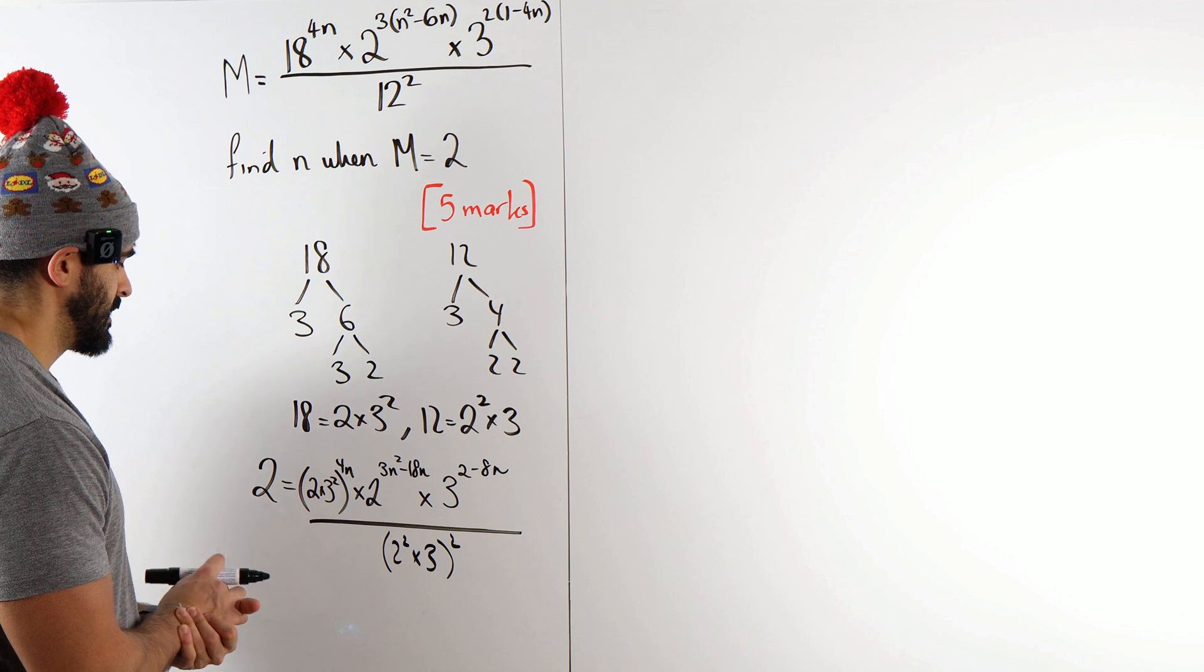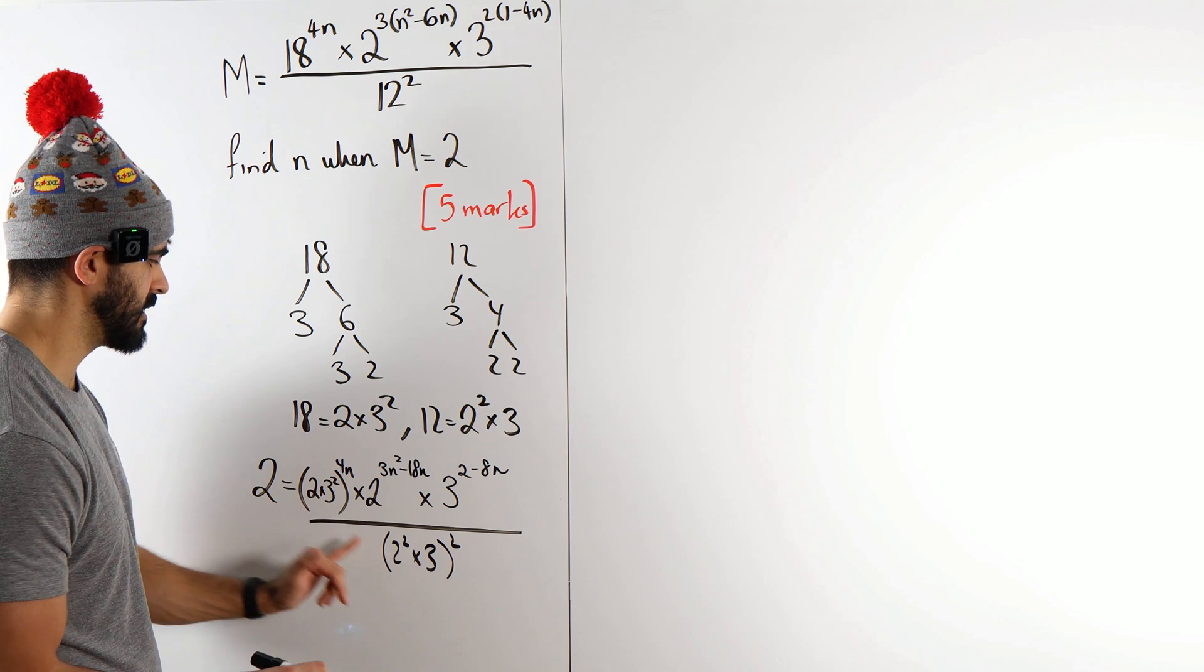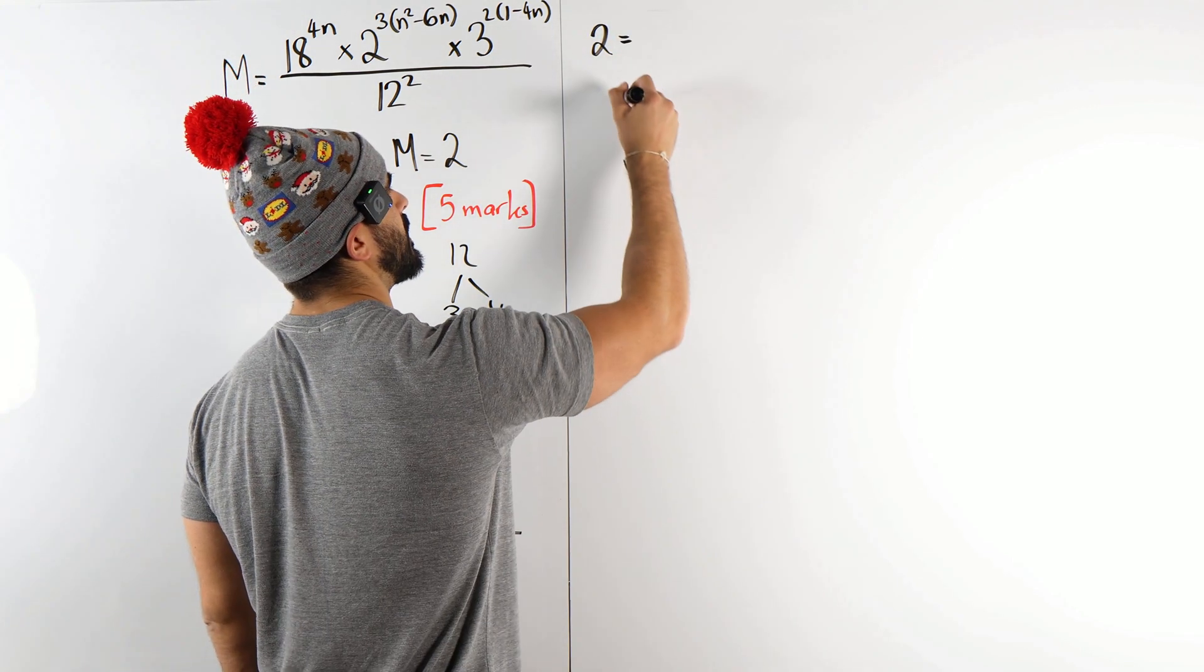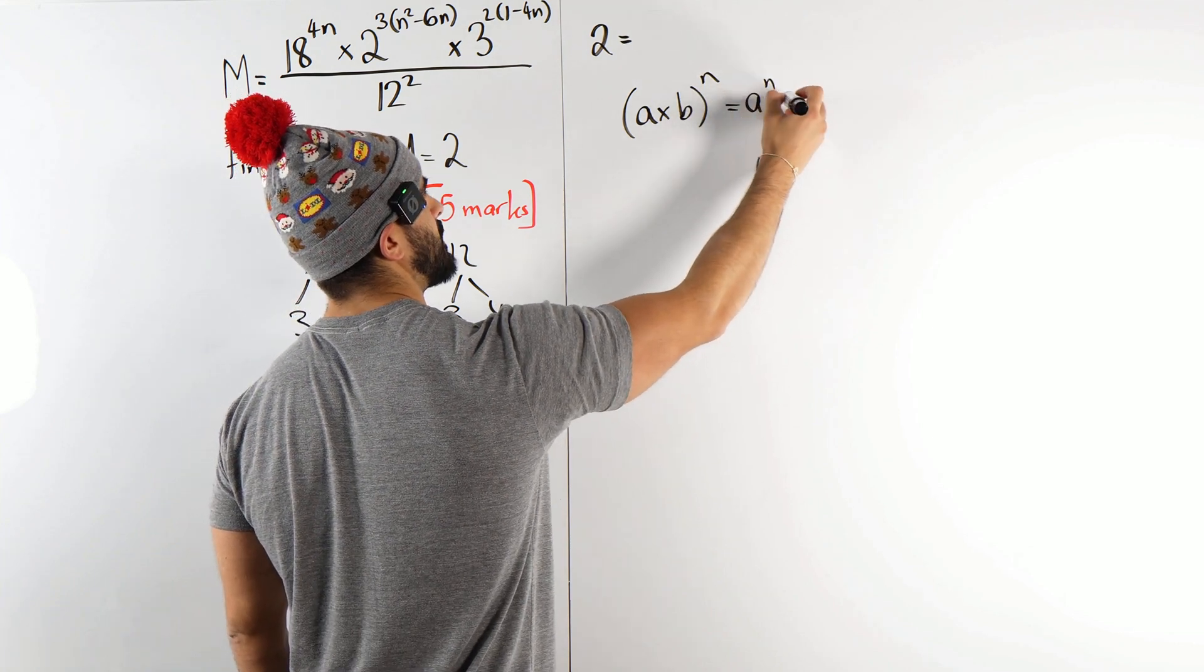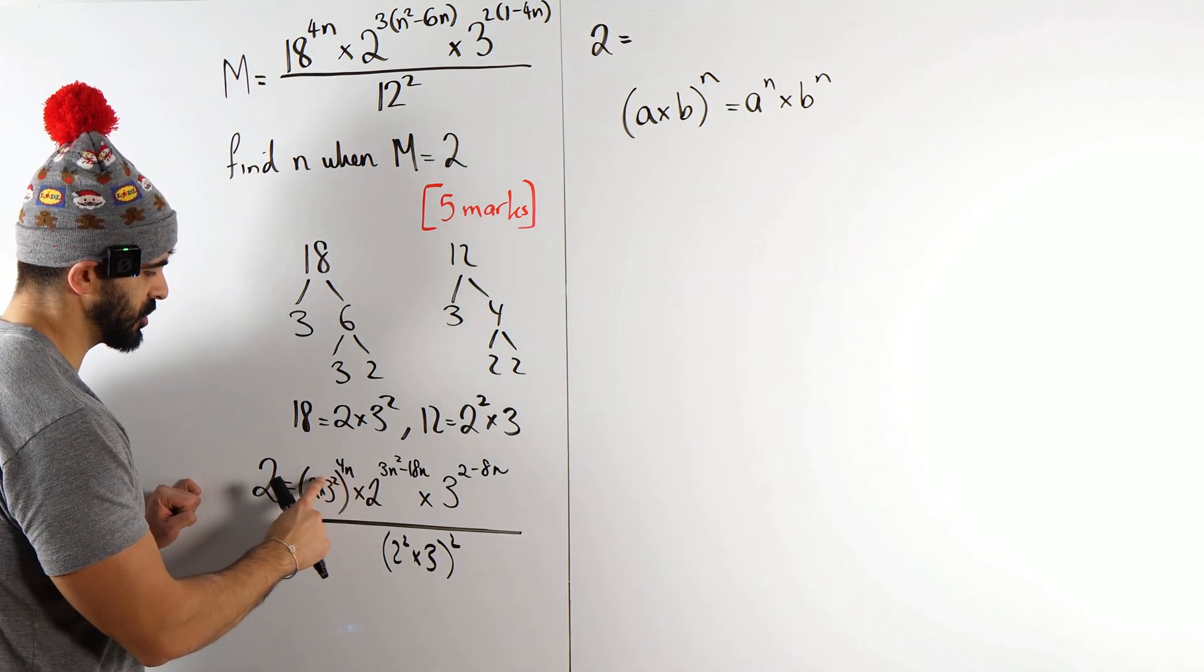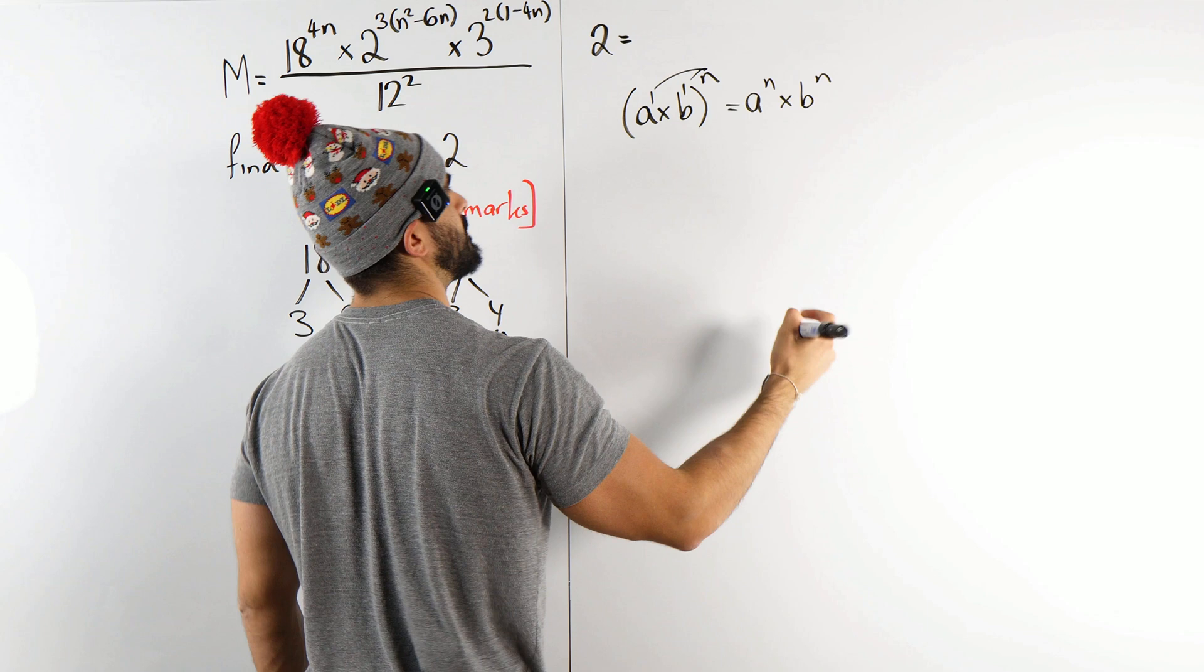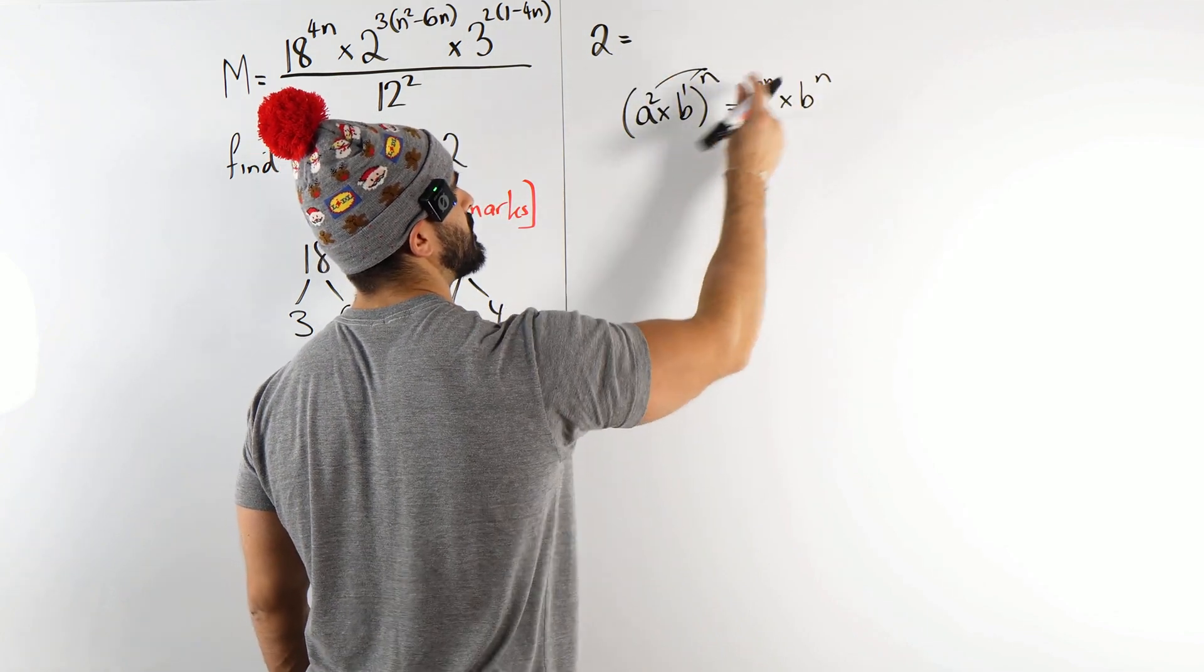Divided by 12, which we know is 2 squared times 3 raised to the power of 2. Now how do we sort this out? I think what I'm going to do is get rid of these brackets. When you have a times b raised to the power of n, you distribute that power of n. It'll become a to the power of n times b to the power of n. It's a multiplication. So you can think of these as a to the power of 1, b to the power of 1. You're doing n times 1, n times 1, just n. If that was squared, you'd have 2n. You're multiplying them.